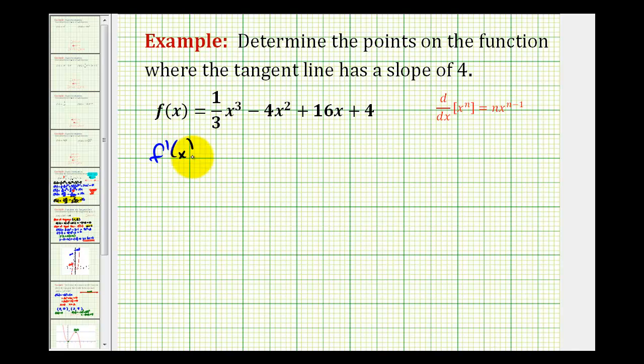So f prime of x is going to be equal to one-third times the derivative of x cubed, that'll be three x-squared, minus four times the derivative of x-squared, that's two x, plus 16 times the derivative of x, which is just one, so we have 16, plus the derivative of four, which is zero.